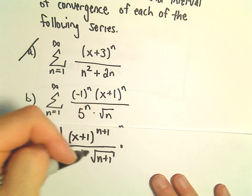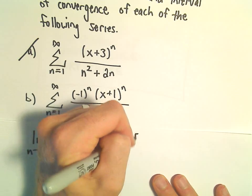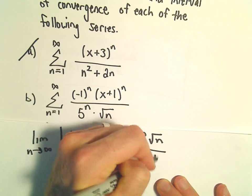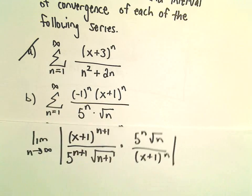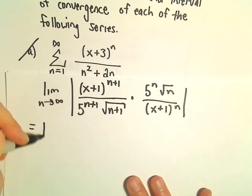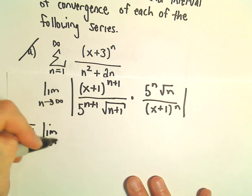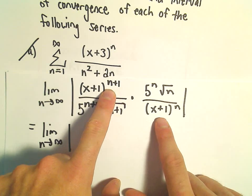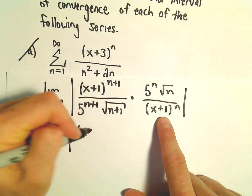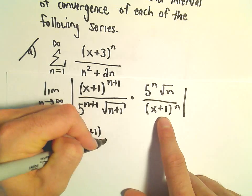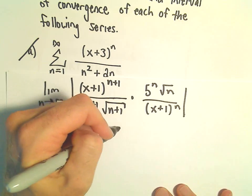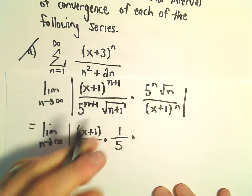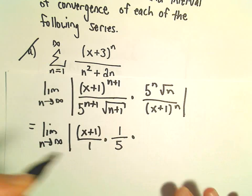Then we can multiply by the reciprocal. So we'll have 5 to the n, the square root of n, and x plus 1 raised to the n power. When we simplify, we're just left with a limit as n goes to infinity. x plus 1 to the n plus 1 over x plus 1 to the n leaves us with x plus 1. 5 to the n over 5 to the n plus 1 leaves us with a 5 in the denominator. And then we'll be left with the square root of n over the square root of n plus 1.